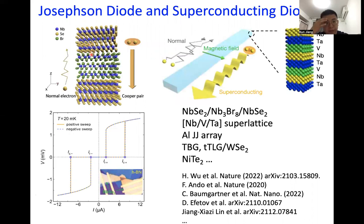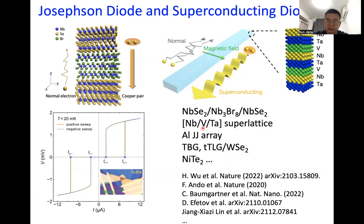In this field, there are many talks about the Josephson diode effect and the superconducting diode effect. In the past two years, there has been exciting experimental progress, including in NbBr3.8, Niobium superlattices, Niobium-Josephson junctions, twisted polygraphene, twisted polygraphene on top of WSe2, and recently NiTe2 materials. In this talk, I will focus only on NbBr3.8 without any magnetic field.